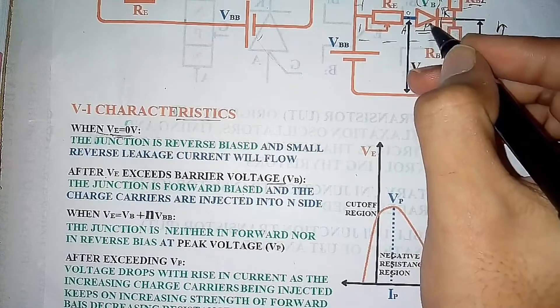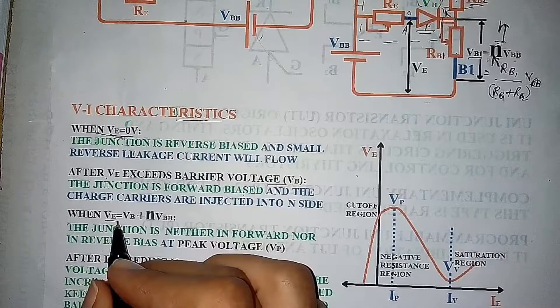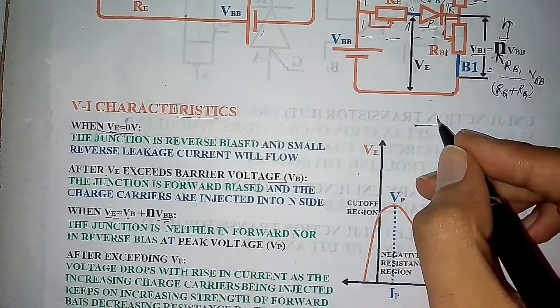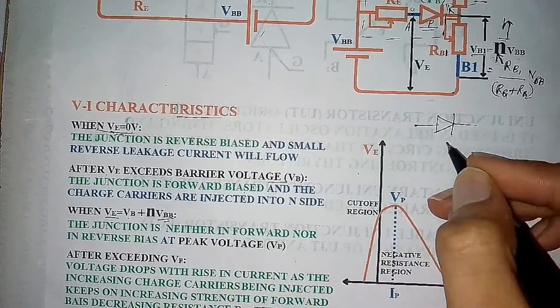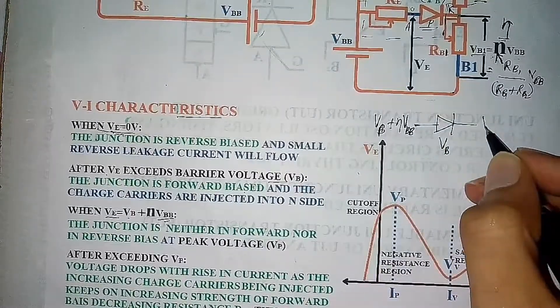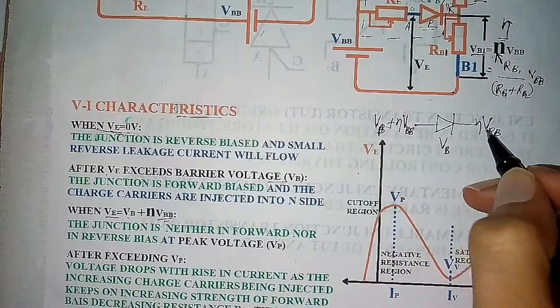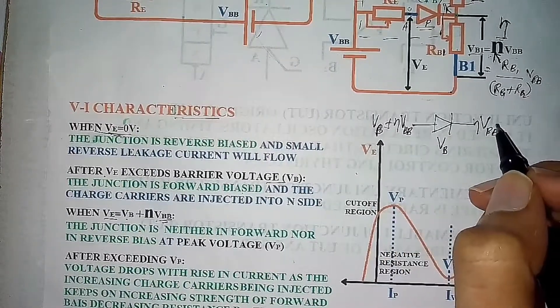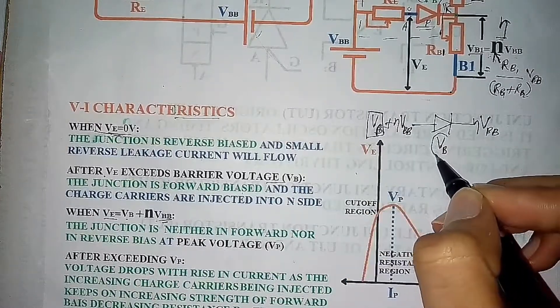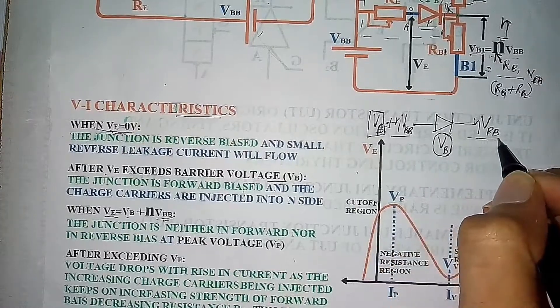The majority charge carriers are injected into the N-type. As VE increases to VB1 plus VBB, the voltage across the diode VB plus VBB, the diode will be neither in forward bias nor in reverse bias. Because this VB is dropped for reducing the depletion region and the voltage on both sides is equal.